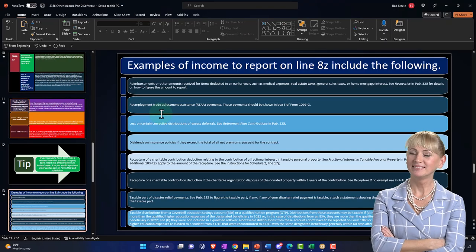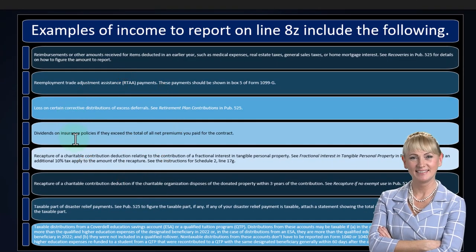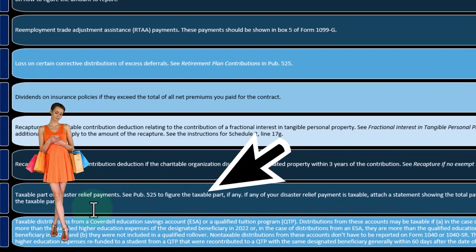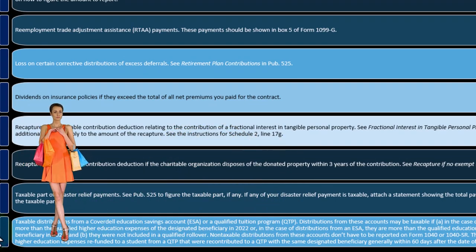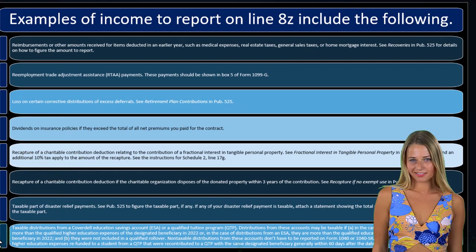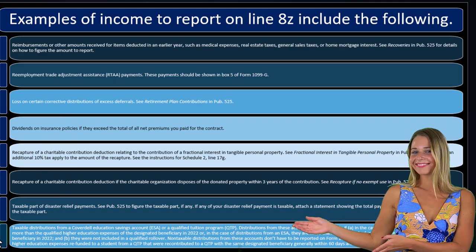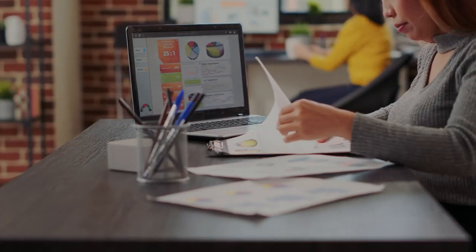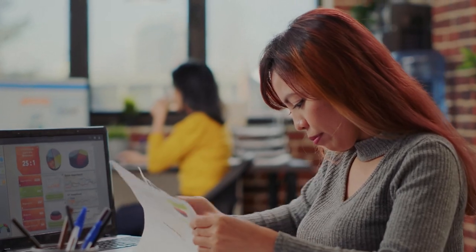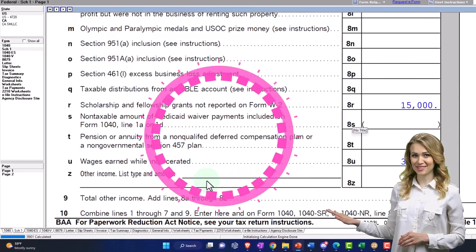Other items include reemployment trade adjustment assistance, loss on certain corrective distributions, dividends on insurance policies, recapture of the charitable contribution deduction - a couple of those recapture items. We also have taxable distributions from the Coverdell Education Savings Account, where equivalent tuition distributions from these accounts may be taxable. If they were subject to tax, that might be the way you'd put them down here on the bottom line - that's the catch-all if there's no other location for it.